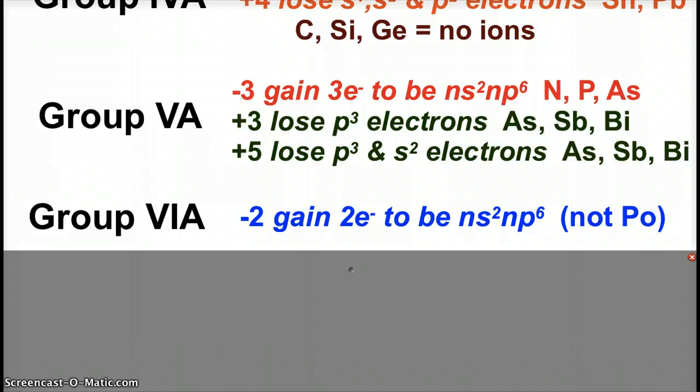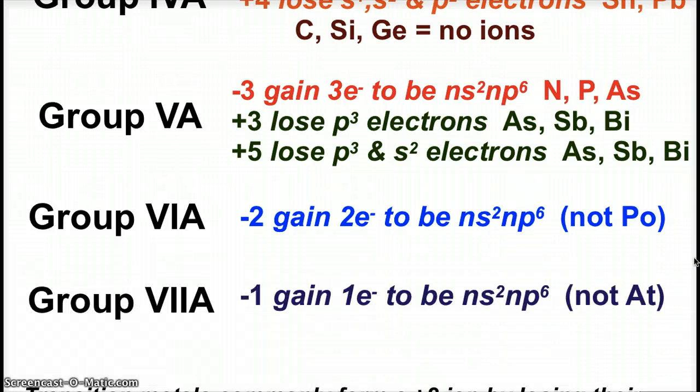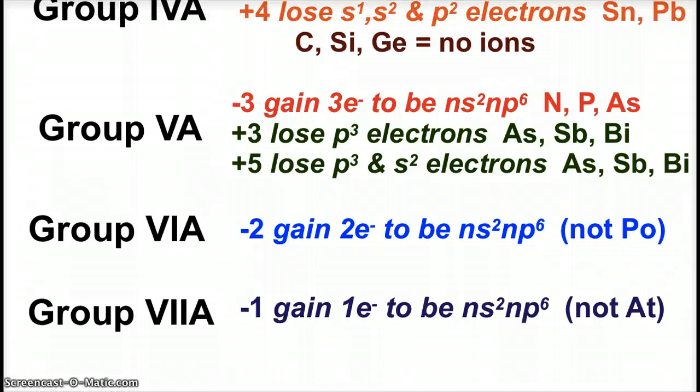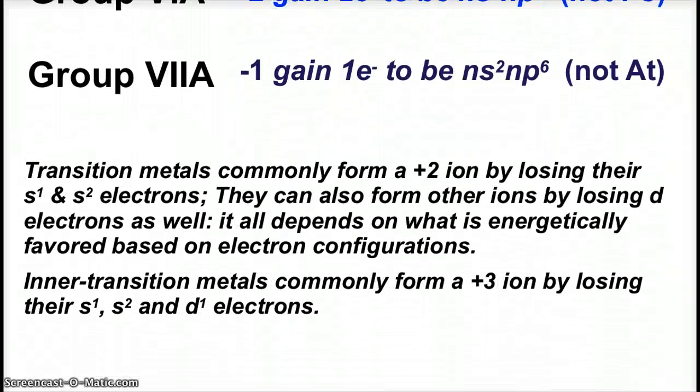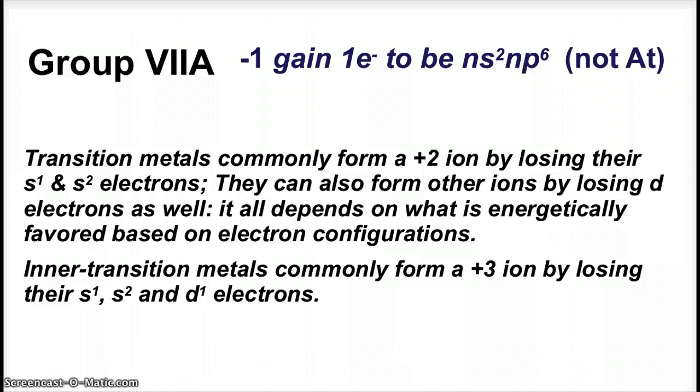Group 6A, now we're strictly in the anion phase. Oxygen, sulfur, selenium, and tellurium will all gain two electrons in order to have that full valence shell. Polonium is too radioactive and unstable to form these ions. Our good friends the halogens will all gain one electron in order to get to that full valence shell. Astatine is too radioactive and unstable to participate in the ion game.